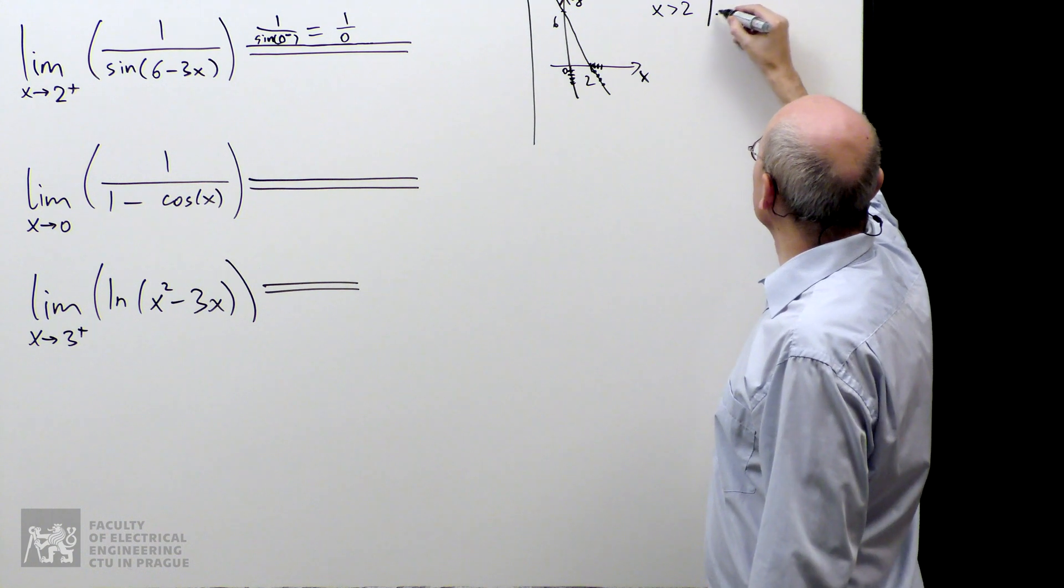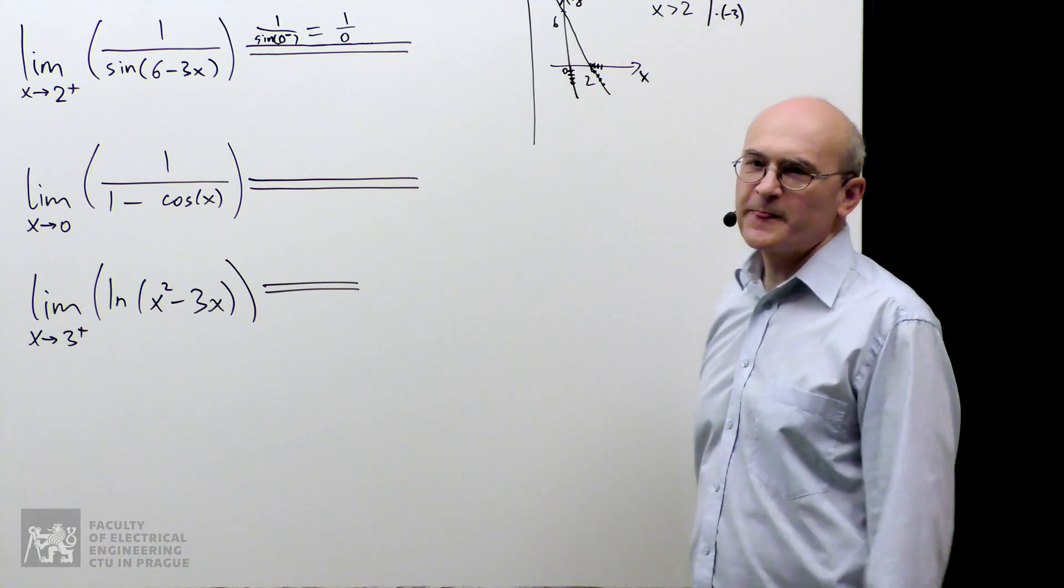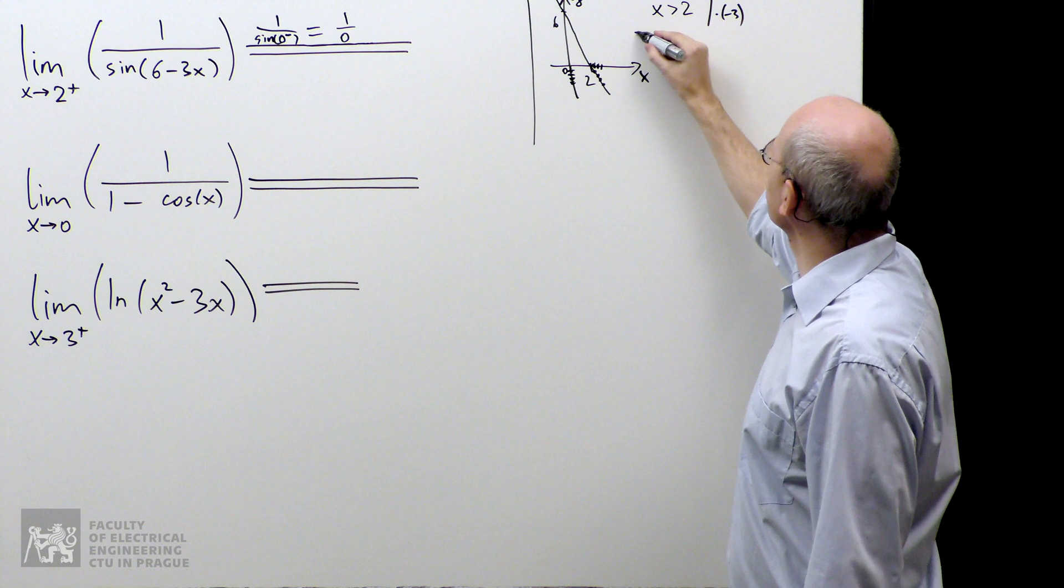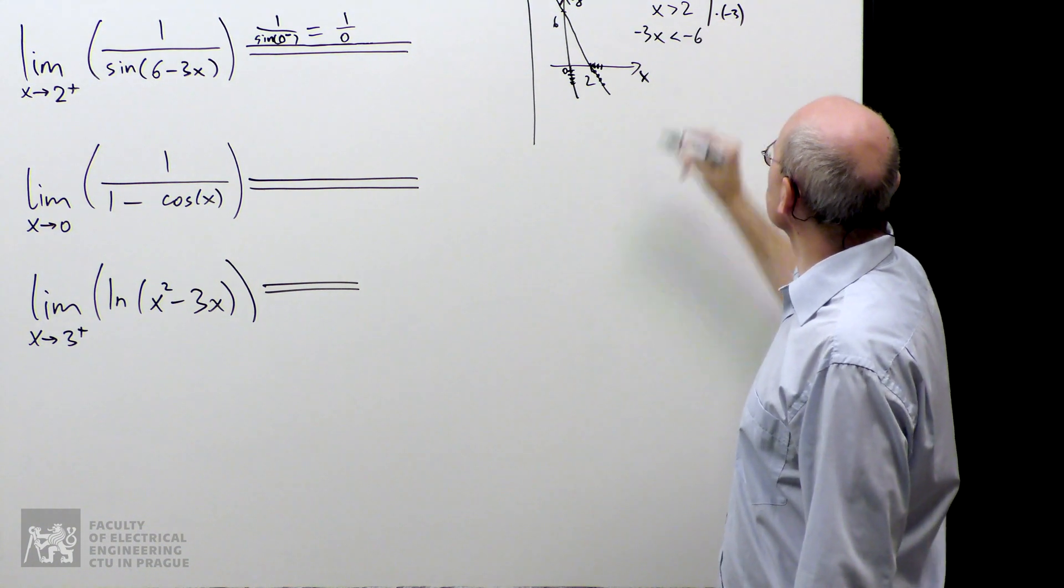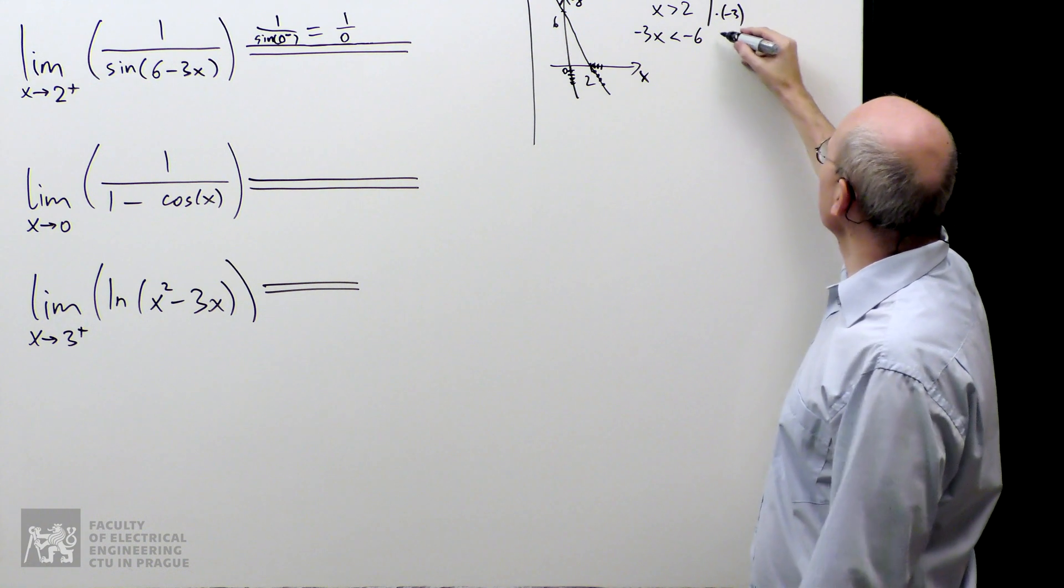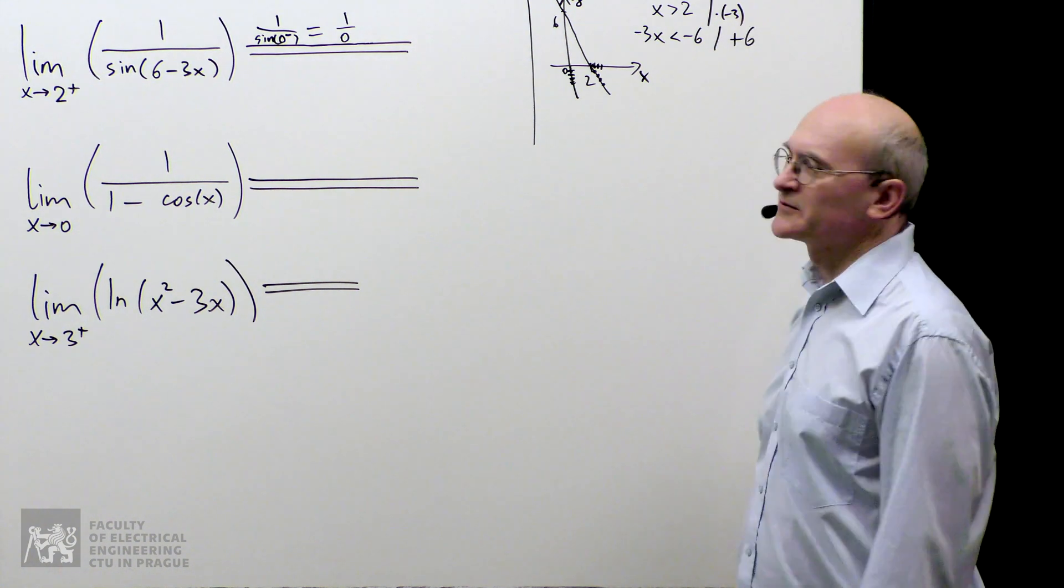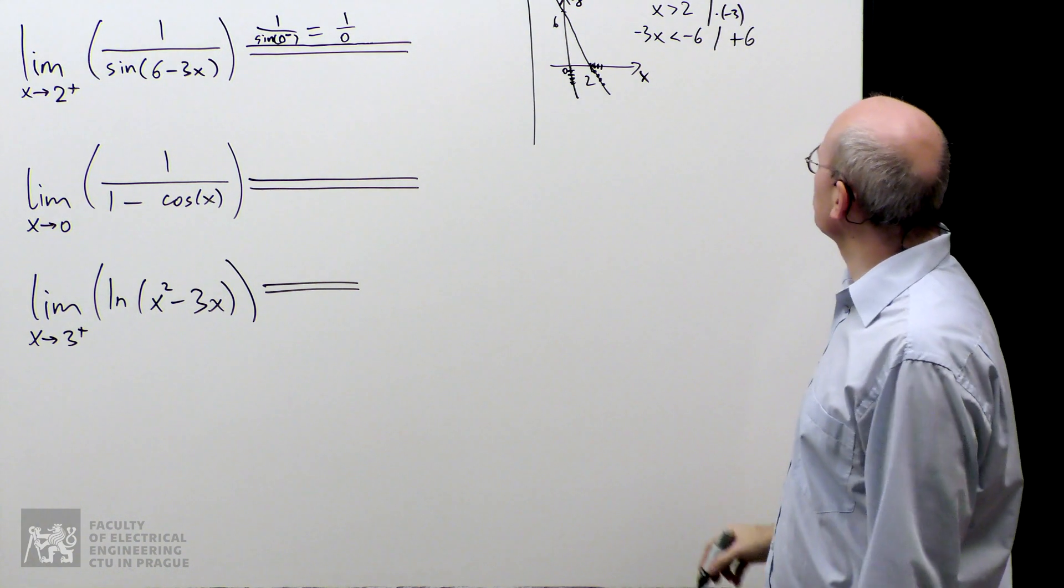I multiply this inequality by negative 3, and when I do it, I get negative 3x. It's less than, I have to switch, negative 6. Now I add 6 to both sides, and let's see what I get.